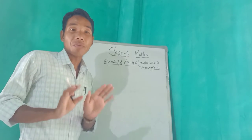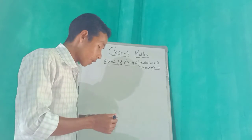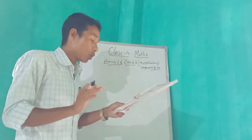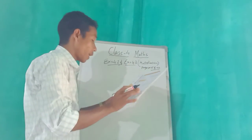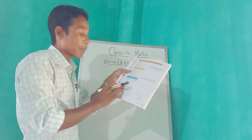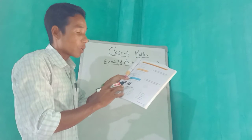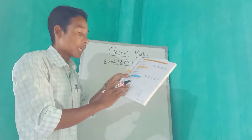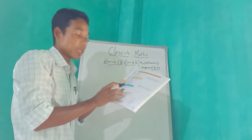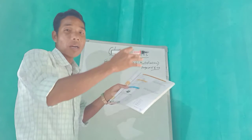Have you got it? Okay, first of all look here on the whiteboard. Exercise 4.2. It is written here: find the product using expanded notation. Expanded notation — that means the number given, we have to make it into different parts.